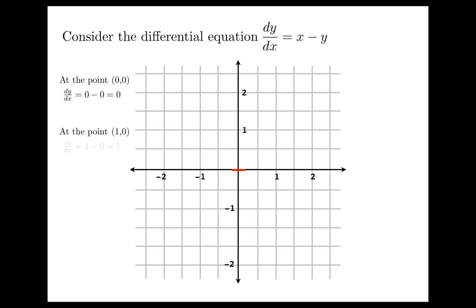So what we should do is try to get more information by looking at other points. At the point (1,0), for example, the formula would tell you the tangent slope has to be one. So we'll put in a small segment of slope one at that point. And continue.